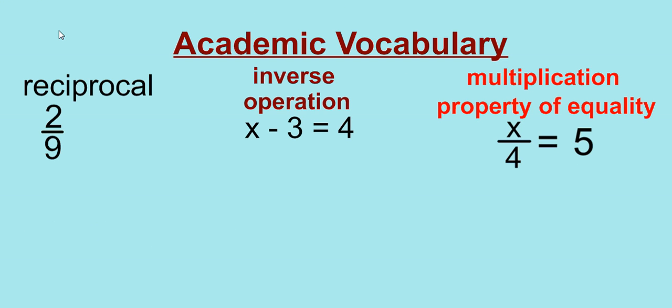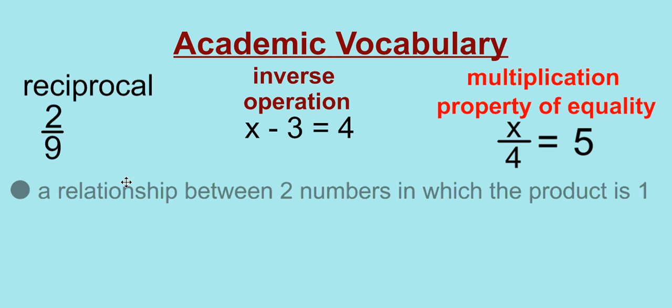Let's look at some academic vocabulary first of all. What is a reciprocal? Well, a reciprocal is a relationship between two numbers in which the product is 1. So if we have two numbers like 2/9 and 9/2, when you multiply them together, you get the product of 1. So 9/2 is the reciprocal of 2/9.